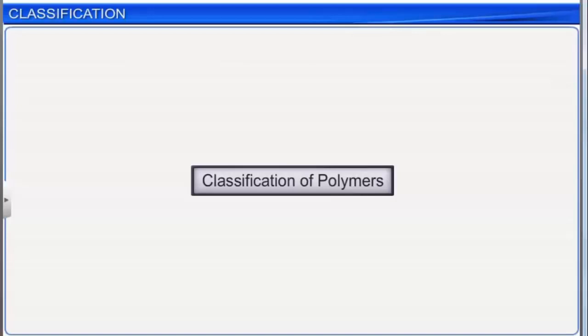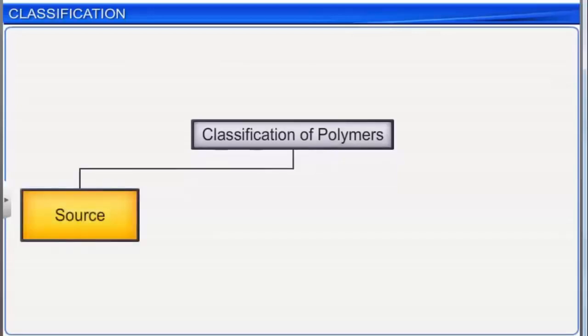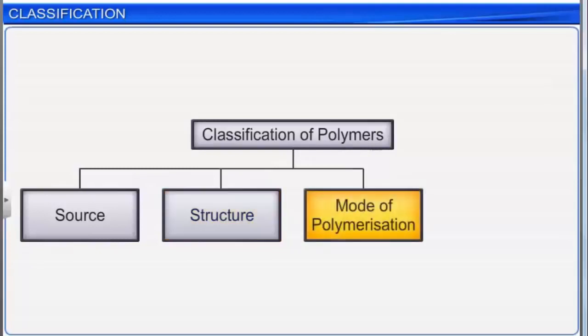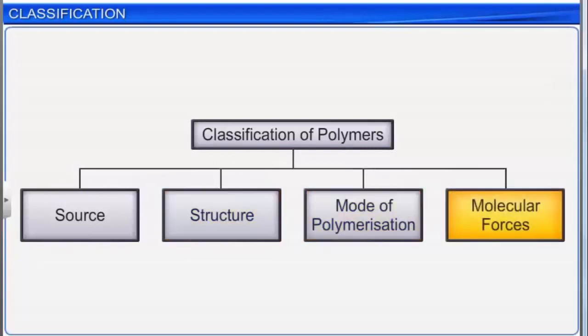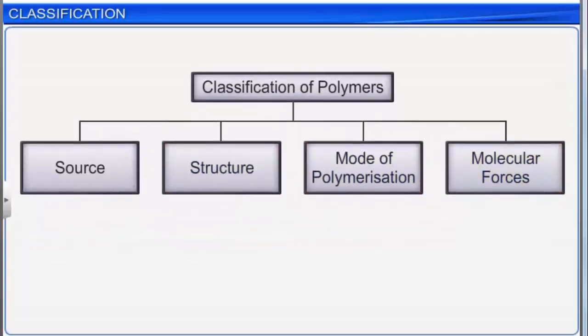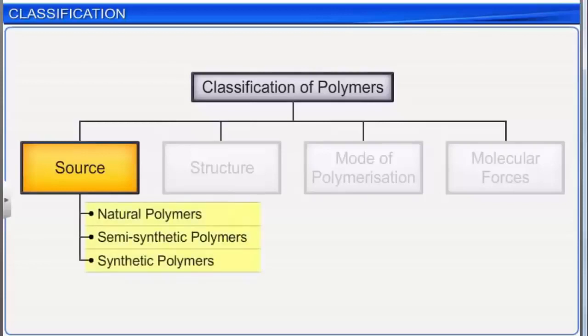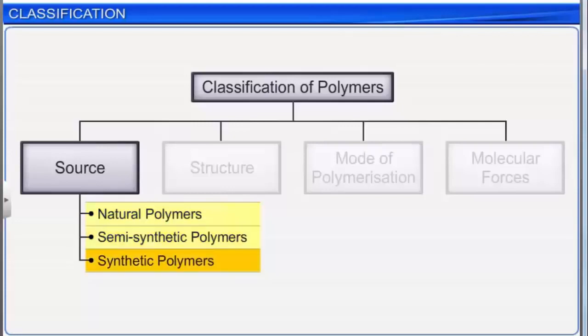Polymers can be classified in a variety of ways — on the basis of their source, structure, mode of polymerization, and molecular forces. Depending upon the source from which they are obtained, polymers are categorized into three types: natural polymers, semi-synthetic polymers, and synthetic polymers.